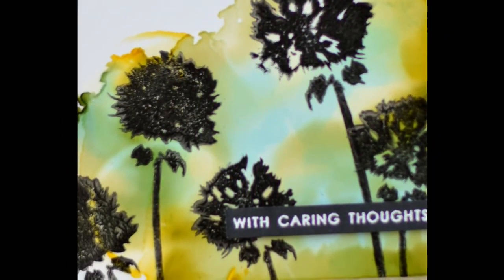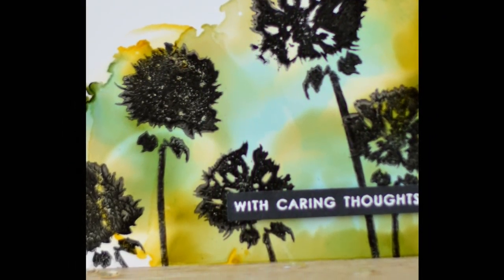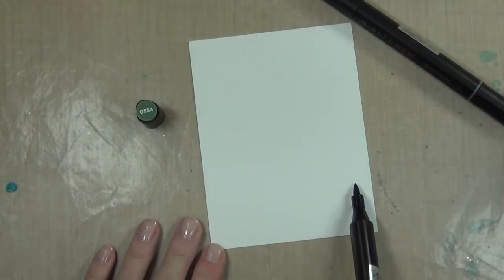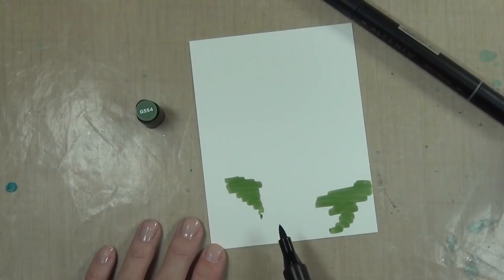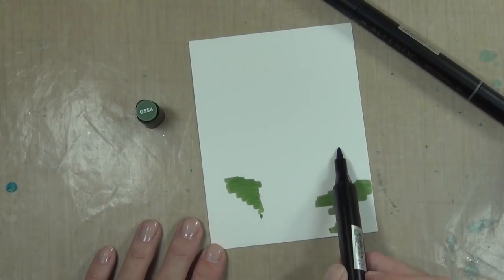Hi, it's Therese and I'm here for Altenew. Today I decided to use the artist markers and some Yupo paper together and see how it goes. So I've cut a piece of the white Yupo paper—this is a synthetic paper—and I've cut it to the same size as my card front.